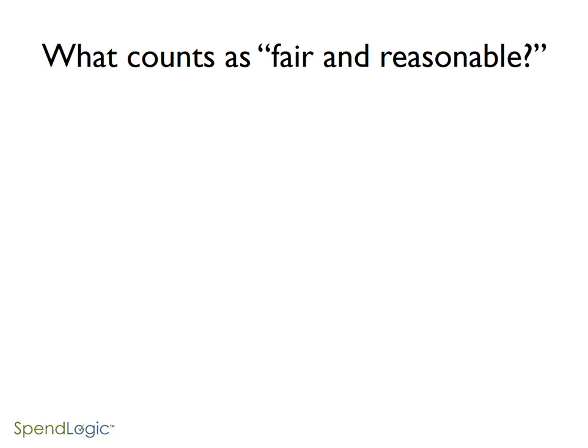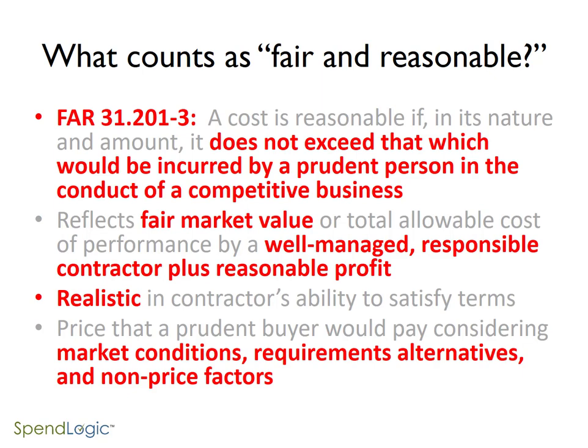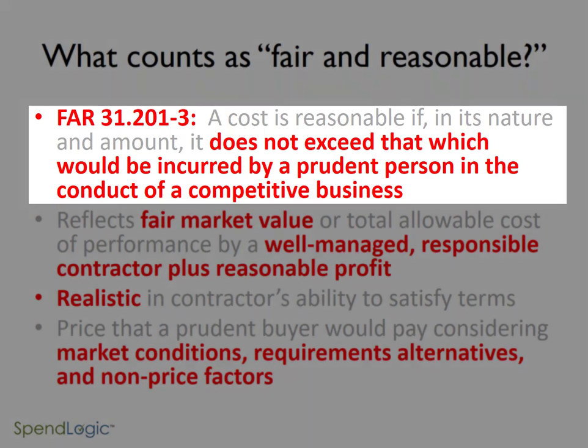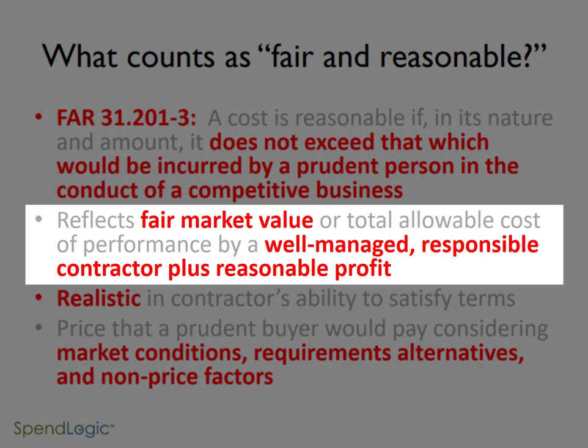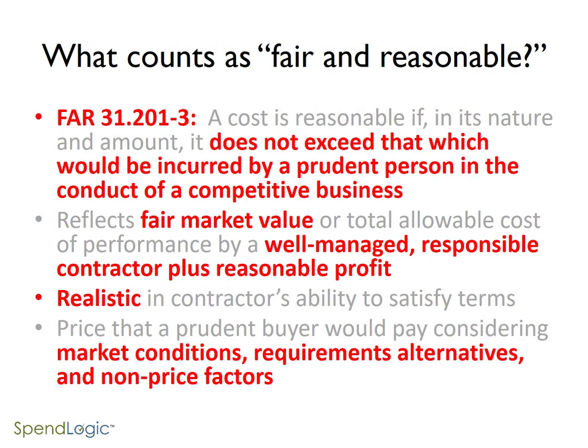This is actually one area in which the FAR does a pretty good job. Throughout the FAR, we're given clues as to how fair and reasonable is defined. Fair and reasonable cost does not exceed that which would be incurred by a prudent person in the conduct of a competitive business. You've probably heard some variant of the joke about the guy selling $1 million gumballs — his price is astronomical, but he responds to doubters that he just needs to sell one gumball to make it big. This is an example of a company that is not interested in conducting competitive business. Next, the price should reflect fair market value of costs of a well-managed contractor plus reasonable profit. Consider the case of a company that has 50% of its buildings sitting idle — this is not a well-managed company, and the cost of maintaining those buildings is being added into the cost of the product you're buying. Lastly, the cost must be realistic and reflective of market conditions, alternatives, and any non-price factors.